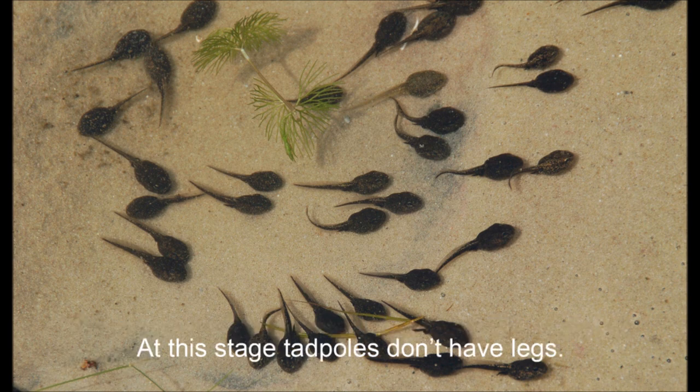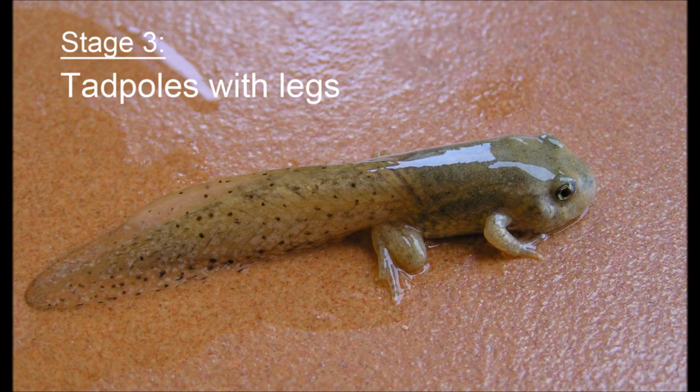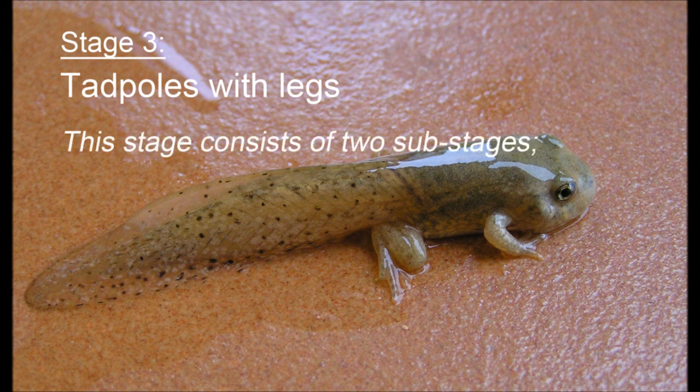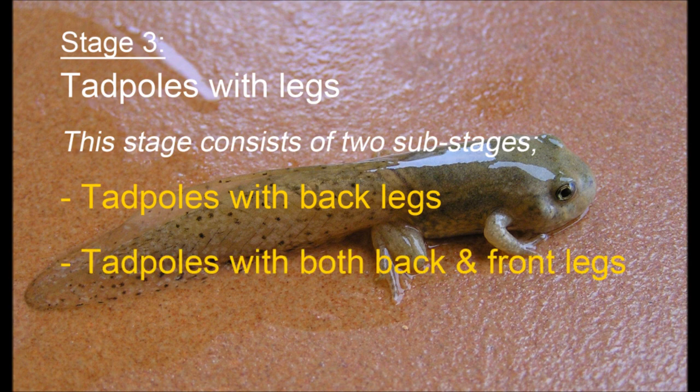Stage two: tadpole. The eggs hatch after a few days and tiny tadpoles emerge. At this stage, tadpoles don't have legs. They have gills to breathe underwater and swim like fish in the water using their tails.